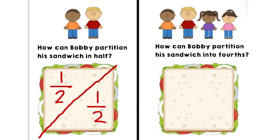Awesome job, rock stars. Now Bobby had another sandwich, and he wanted to share it with his friend and his two other friends. So since there are now four of them who want a piece of the sandwich, Bobby still wants to be fair — he wants each of them to receive an equal part. If we are cutting this sandwich into four equal parts, what would that be called? That's right — in fourths. So how can Bobby partition his sandwich into fourths?